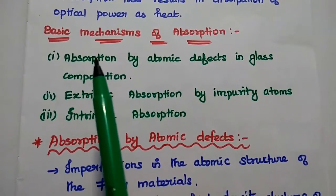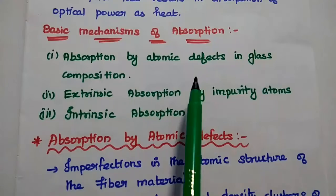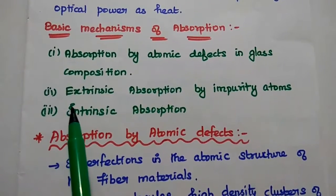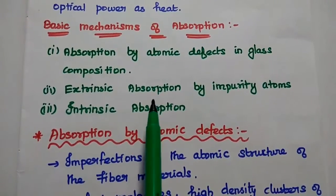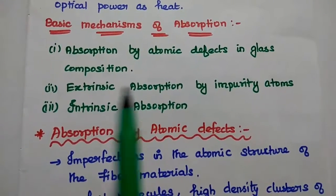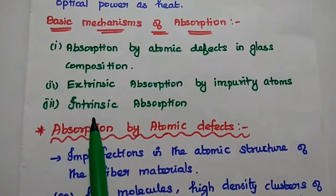The first one is absorption by atomic defects in glass composition. The next one is extrinsic absorption by impurity atoms. The third one is intrinsic absorption.